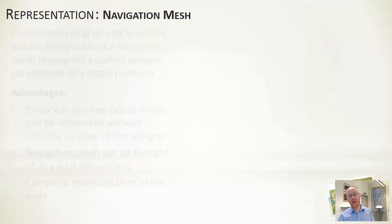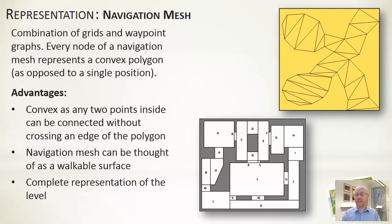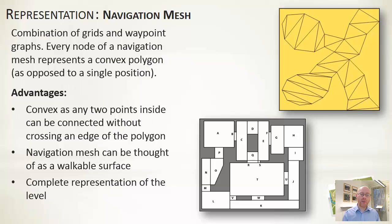The final representation is a navigation mesh, commonly used in three-dimensional games. It defines the entire walkable surface using convex polygons — rectangles, but more commonly triangles. It's very flexible. A nice property of a convex shape is that if you're standing on it and want to reach any other point within that shape, you can walk in a straight line without leaving it. Concave shapes don't guarantee this, so convex is the safe option.